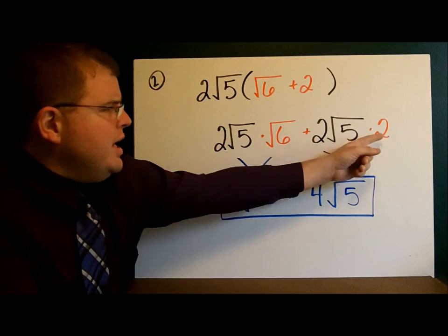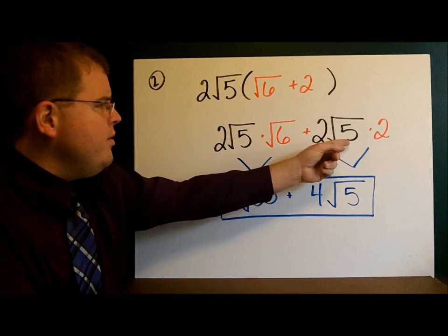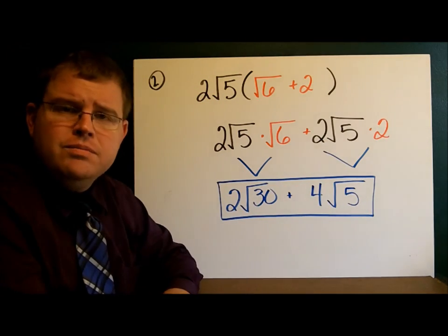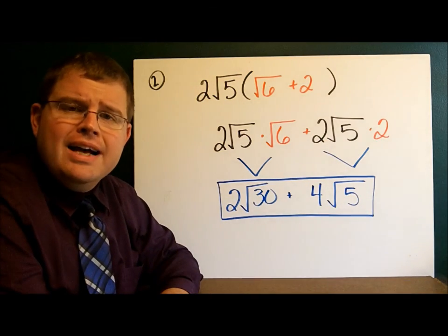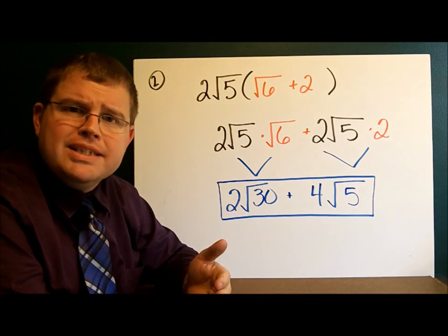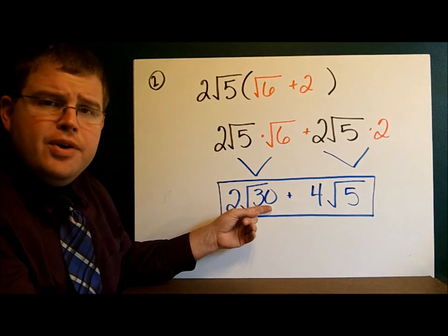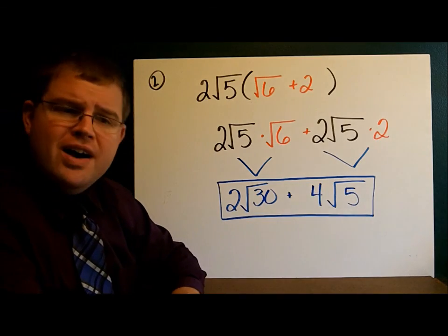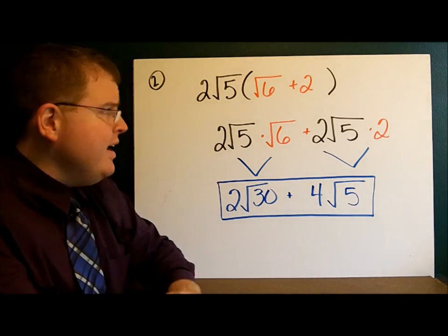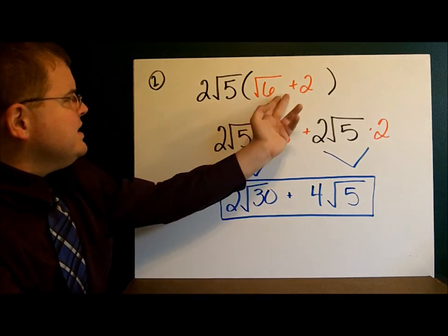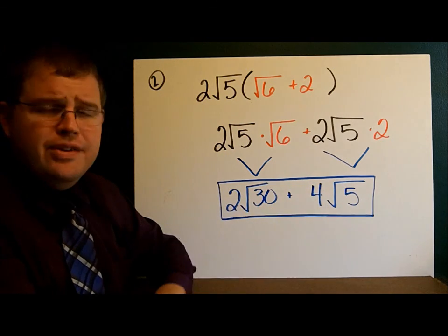Over here we have 2 times 2, which is 4, square roots of 5. Now, once I do that, I should always check to see if anything can be simplified. Square root of 30 doesn't simplify. Square root of 5 does not simplify. And so, this simplifies into this.